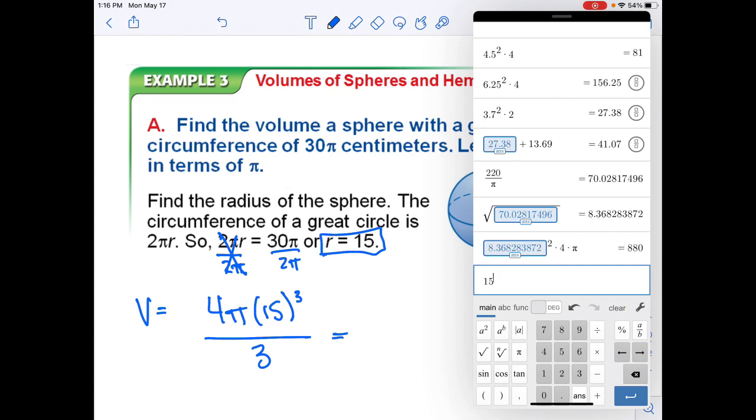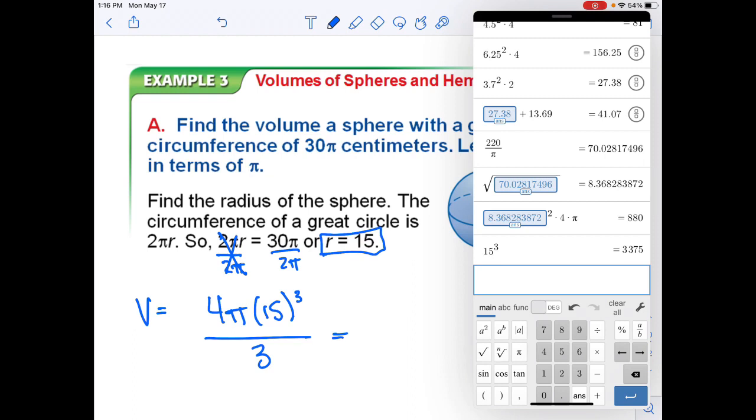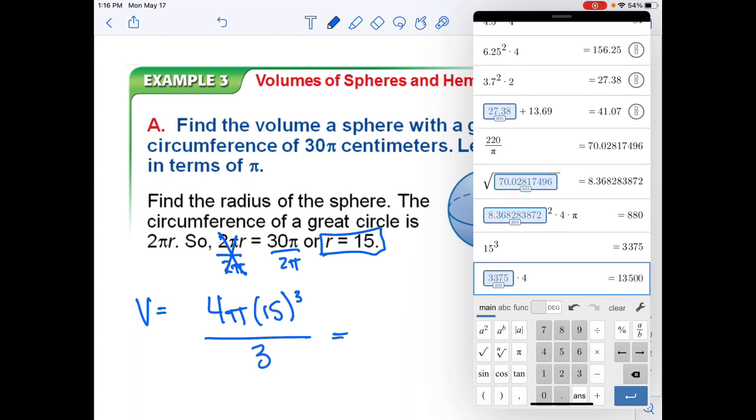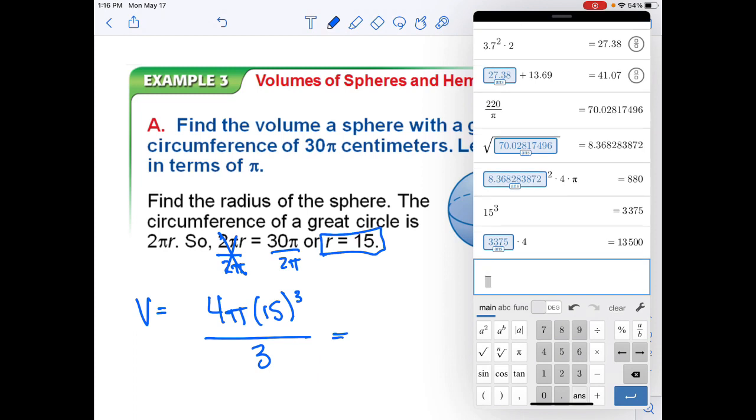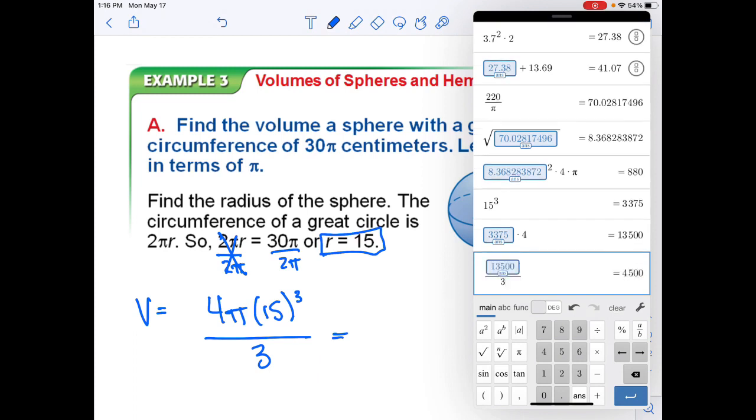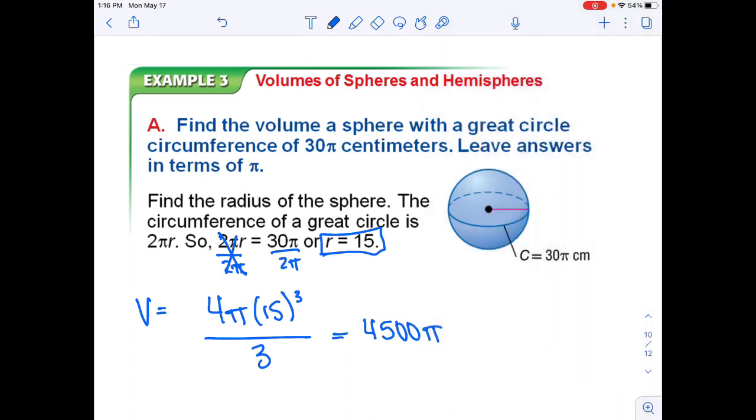So 15 cubed times 4, then divided by 3 is equal to 4,500π. And it's volume, so it's cubic centimeters, is what would fill the inside of this sphere.